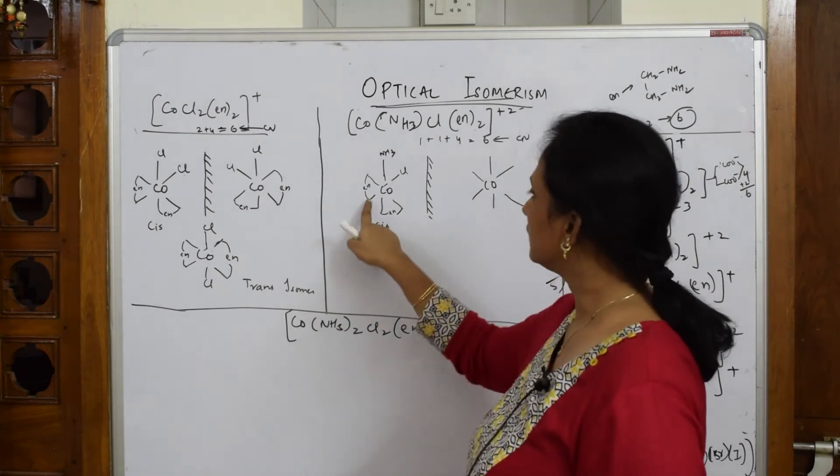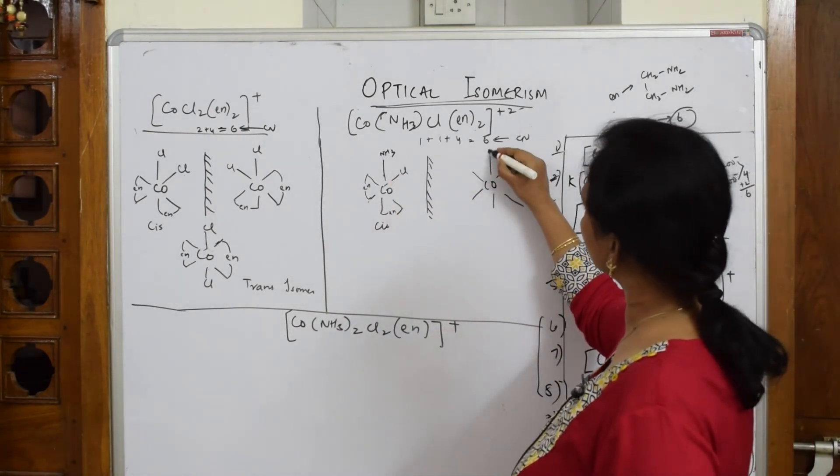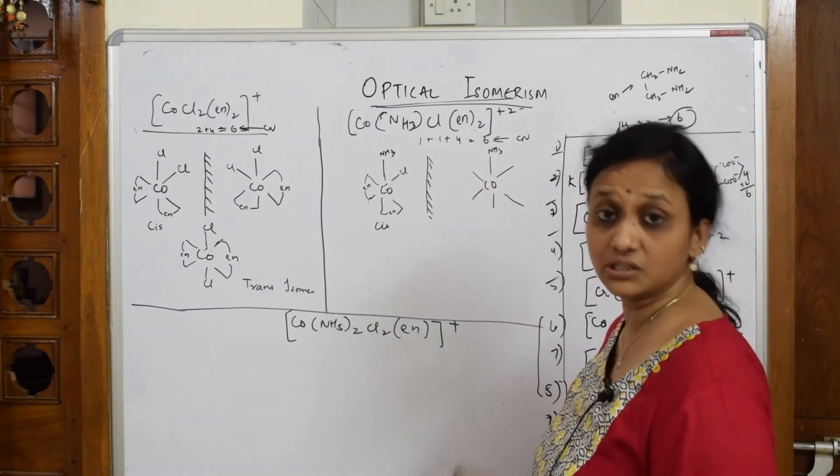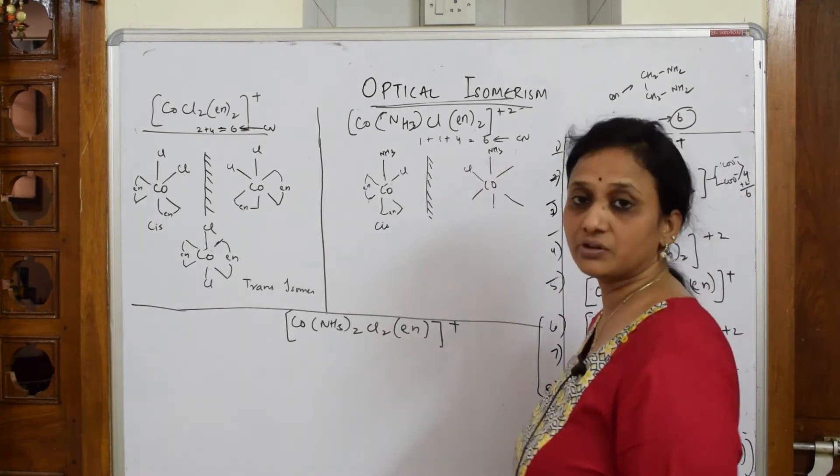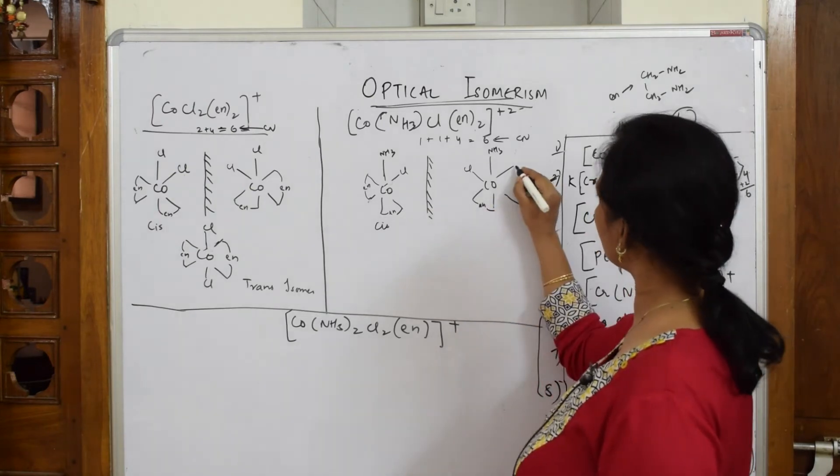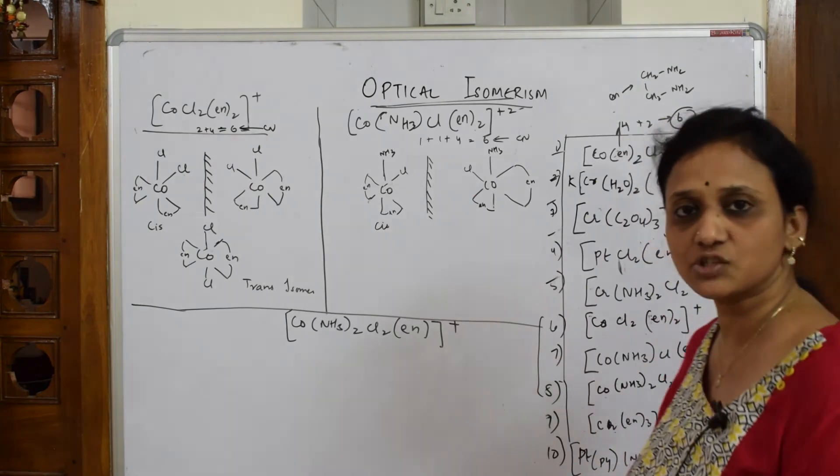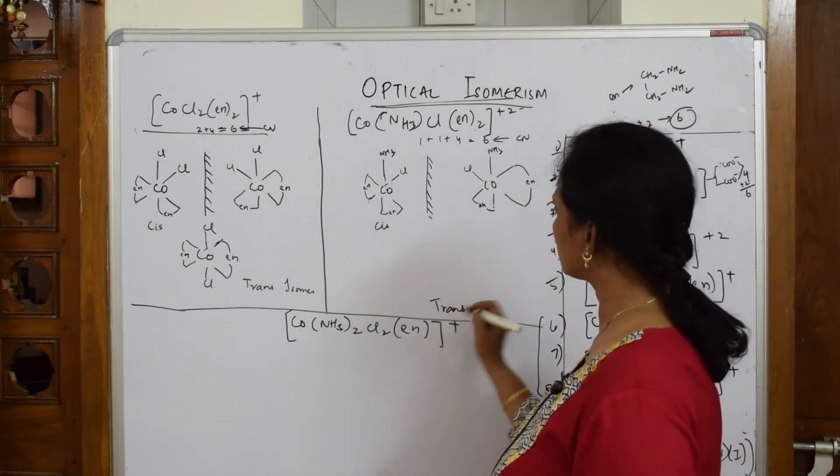So this is a cis isomer. Draw the mirror image of this. Start with ammonia. Now rotate it - levorotatory. Start from here. Ammonia is here, then Cl opposite to this, mirror of that. EN is here, draw that, link EN on the other side. EN ethylenediamine. This is the cis isomer and mirror image.